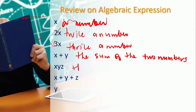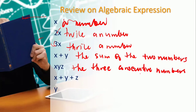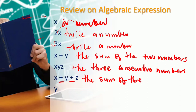So we have three consecutive numbers. Makakasunod is consecutive numbers. We can also express them as a, b, c or p, q, r — any consecutive variables. So the three consecutive numbers. If we have x plus y plus z, so we have their sum — the sum of three consecutive numbers.